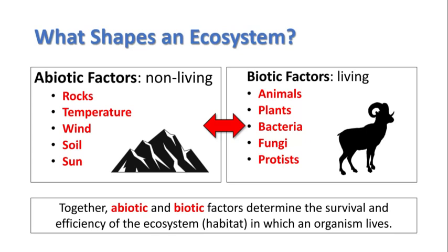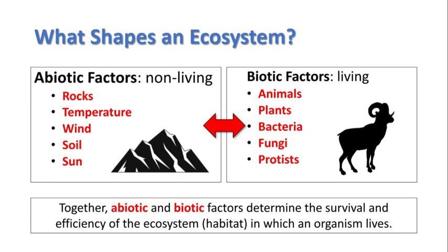What shapes an ecosystem? There are two different things: abiotic factors and biotic factors. When we put 'a' in front of a word it means the opposite, so biotic means living. Examples of biotic factors would be animals, plants, bacteria, and fungus. Abiotic means non-living, so easy examples would be rocks, temperature, wind, soil, and the sun.